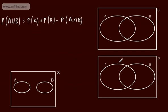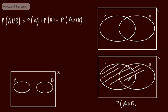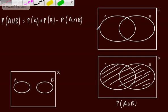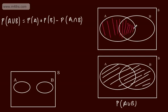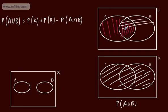From our work with Venn diagrams, the probability of A union B is everything in the two ellipses or circles. If we consider this as two distinct regions, the probability of A plus the probability of B means we've shaded the intersection twice. Therefore, to get the probability of A union B, we need to subtract one lot of the intersection — we've shaded two, so we take one away. That's a graphical representation using Venn diagrams.